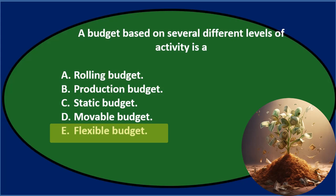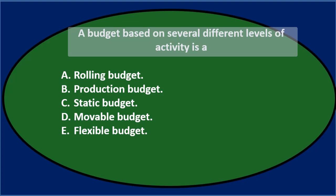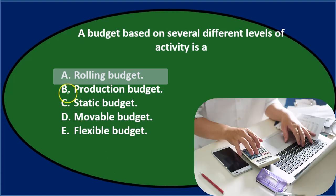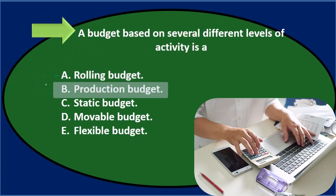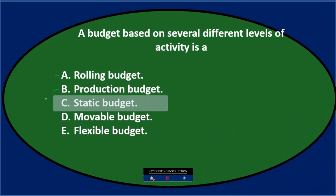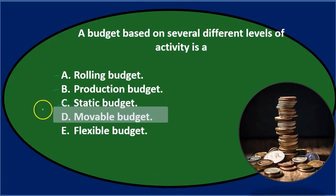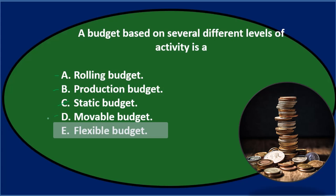Let's go through this using the process of elimination. A rolling budget sounds like it's moving and could have different levels of activity, so that seems reasonable. Production budget might also apply. Static budget indicates something not moving, staying the same, so I would think it's not C. Movable budget implies movement too. Flexible budget also sounds reasonable — it has movement. So we'll keep A, B, D, and E for now.